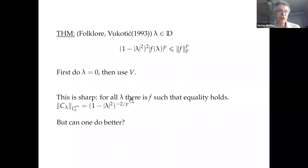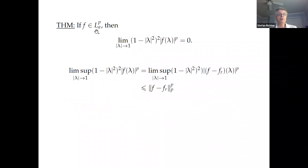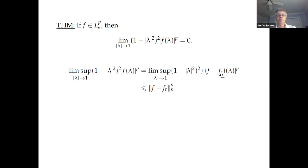It's sharp when we fix λ and change f. But we can also fix f and let λ vary. As λ approaches 1, the big-O estimate actually becomes a little-o condition. This is a standard fact in spaces where polynomials are dense. You look at the limsup, and because the dilation f_r is bounded when you take the limsup as λ goes to 1, you apply the pointwise estimate to f minus f_r, getting the norm, which can be made less than any ε. So the limsup must be zero.